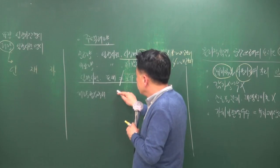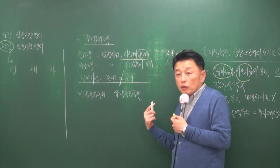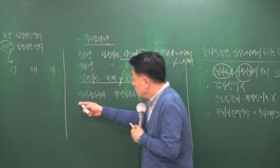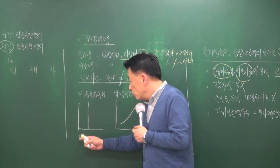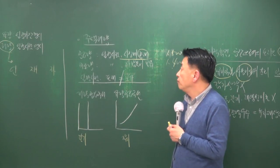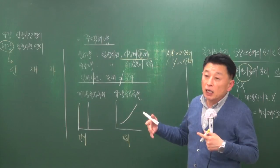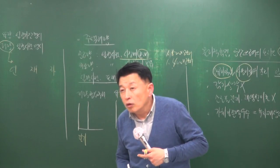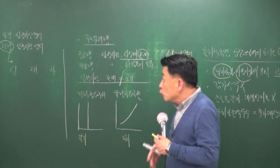저량 공급 곡선과 유량 공급 곡선 중 저량 공급 곡선이 단기 공급 곡선이고 유량 공급 곡선이 장기 공급 곡선입니다. 유량을 통해서는 주택 경기를 측정할 수 있는데, 거래량·수요량 등 매년 공급된 양의 흐름을 파악하는 데 유량 개념이 사용됩니다.